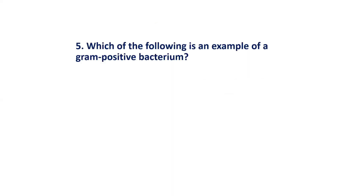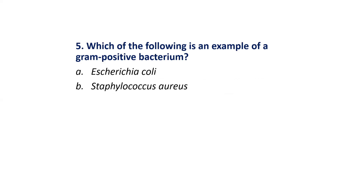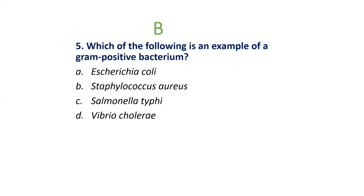MCQ 5: Which of the following is an example of a gram-positive bacterium? Options are: Escherichia coli; Staphylococcus aureus; Salmonella typhi; Vibrio cholerae. The correct answer is Option B: Staphylococcus aureus.